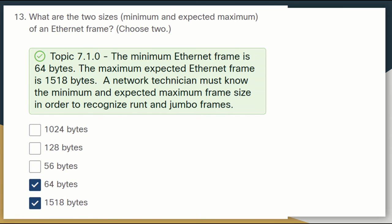What are the minimum and maximum sizes of an Ethernet frame? The minimum Ethernet frame size is 64 bytes. The maximum expected Ethernet frame size is 1518 bytes.